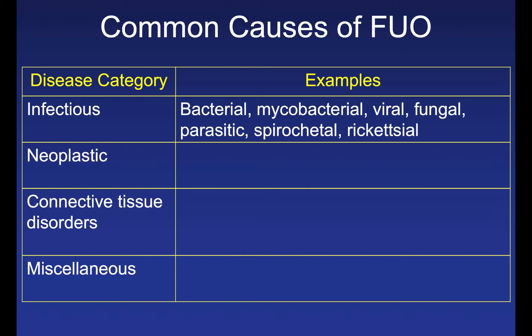For infectious causes of FUO, I think about seven types. Bacterial: endocarditis and abdominal abscess. Mycobacterial: tuberculosis. Viral: CMV, EBV, and HIV — which leads to opportunistic infections causing fever. Fungal: the three endemic fungi — histo, blasto, and cocci — and it's important to know the geographic regions where these are seen. Parasitic: think about this in patients with eosinophilia and GI illness. Spirochetal: syphilis, Lyme disease, or leptospirosis. And rickettsial: Rocky Mountain spotted fever is the classic, but Q fever also falls here.